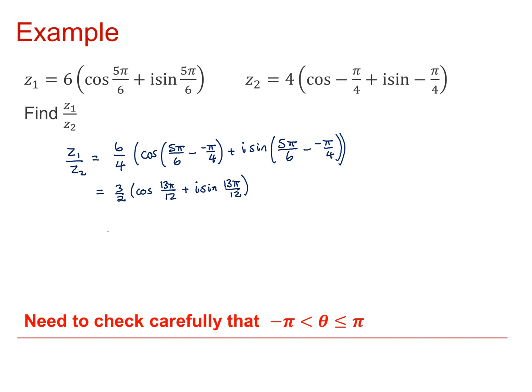But our argument here is bigger than pi and we need to get it into the range for a principal argument. So we take away 2 pi to get us right round a full turn. So that's 3 over 2 cos minus 11 pi over 12 plus i sine minus 11 pi over 12. And I'll put those negative arguments into brackets to make it a little clearer.